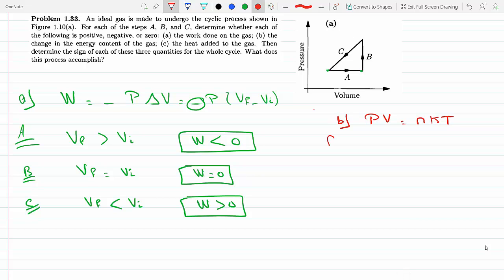Now, in process A, we can see here that the temperature is proportional to the pressure and the volume. Now, in A, the pressure stays the same, but the volume goes up. The volume here increases, which means the temperature would go up, which means that the change in internal energy in A will be greater than zero.